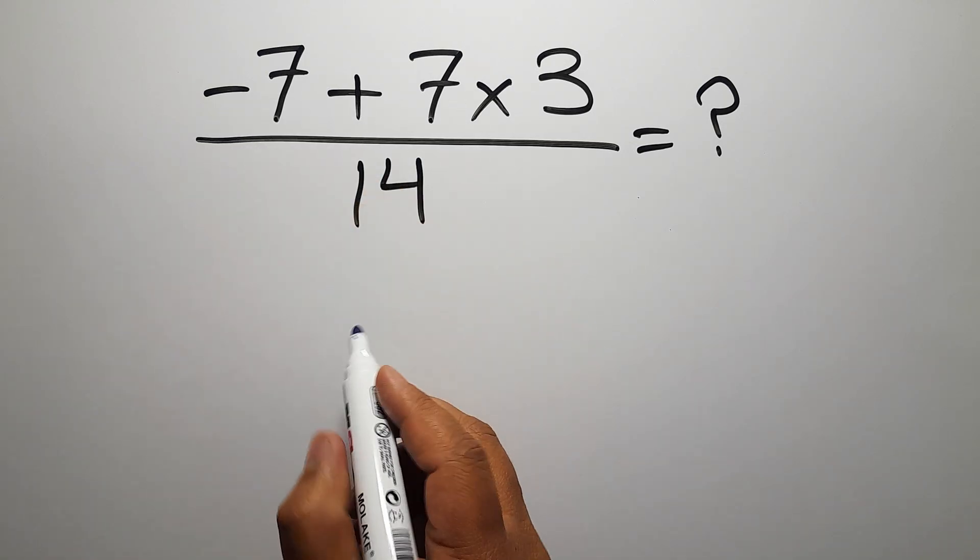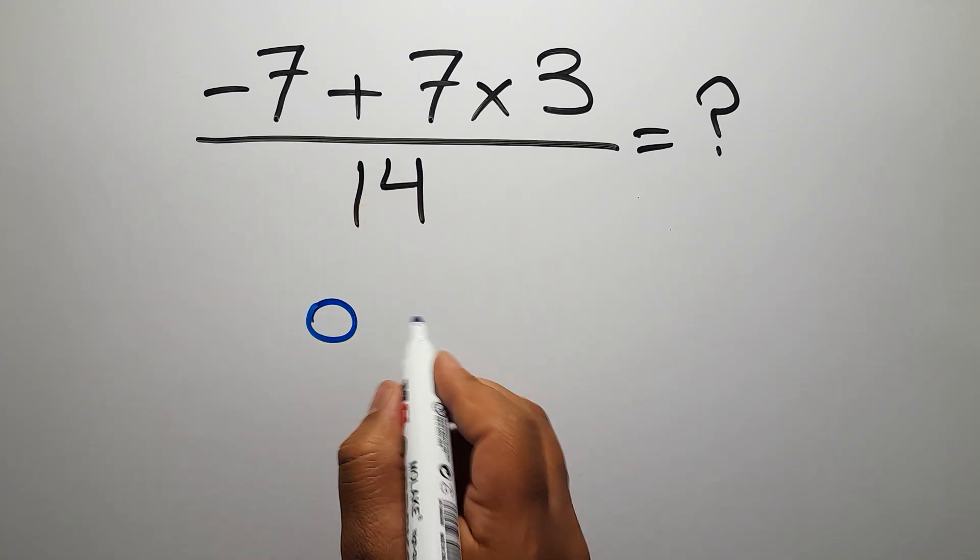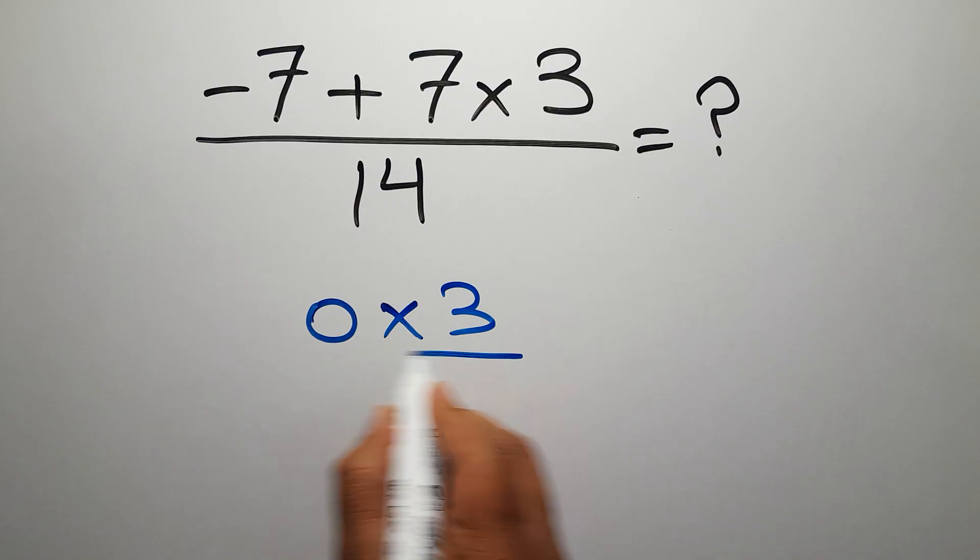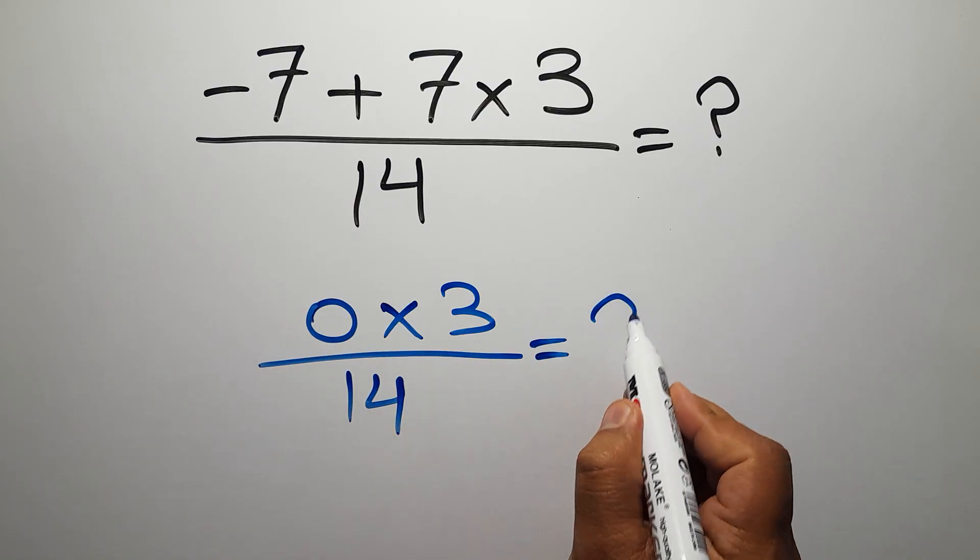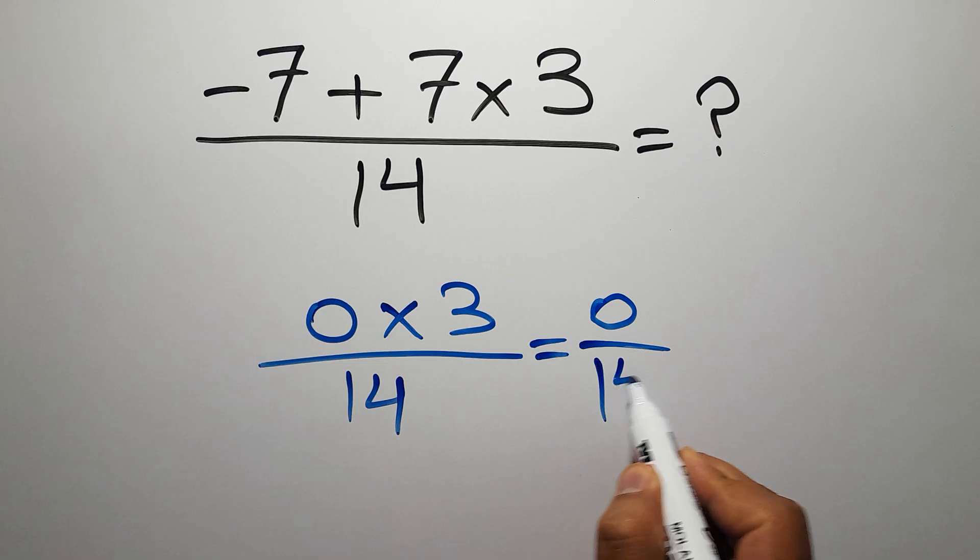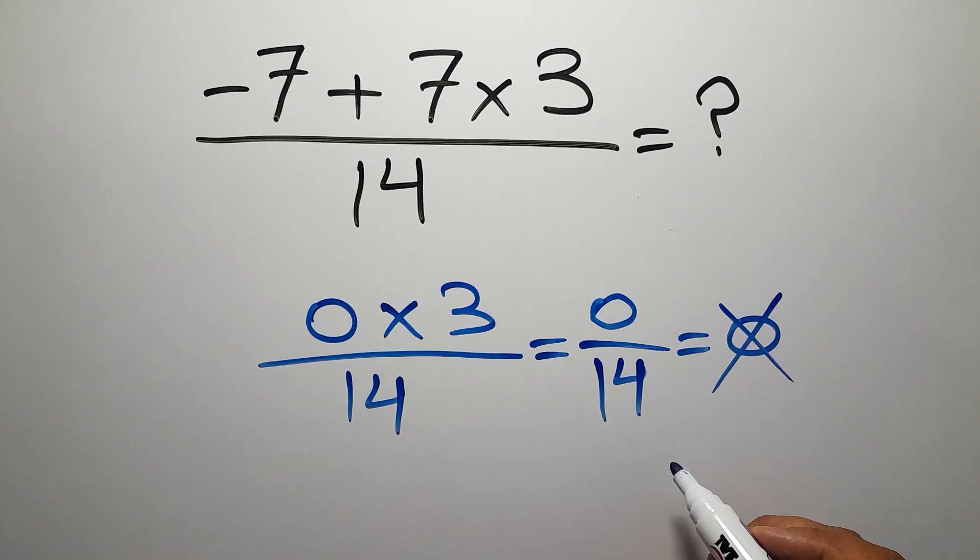Negative 7 plus 7 gives us 0, so 0 times 3 over 14. 0 times 3 equals 0, and 0 over 14 is just 0. But this answer is not correct because according to the order of operations, first we